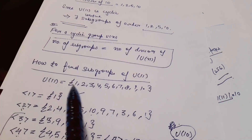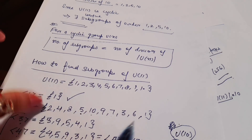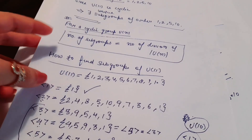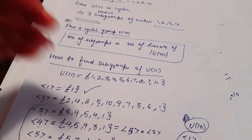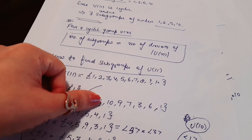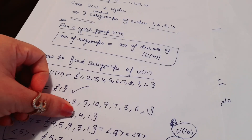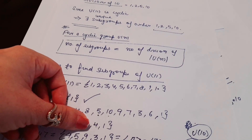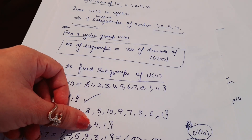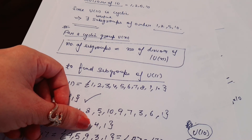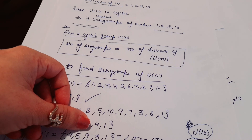I hope U(11) is now clearly understood — what U(11) is, how to find it, how to find its subgroups, and the number of subgroups. If you have any doubt, please let me know in the comment section. If you are liking it, please subscribe to my channel, visit my Telegram group 'Mathematics by Dr. Upasana Bahuchata Taneja', and also my Facebook group 'Mathematics Classes'. Press the bell button for latest updates. Thank you for watching.